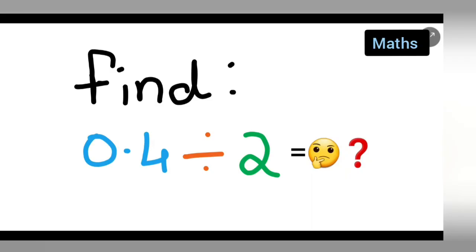Welcome to today's class of mathematics. Today's question is taken from class 7th mathematics, from the fractions and decimal chapter. The question is: find 0.4 divided by 2.